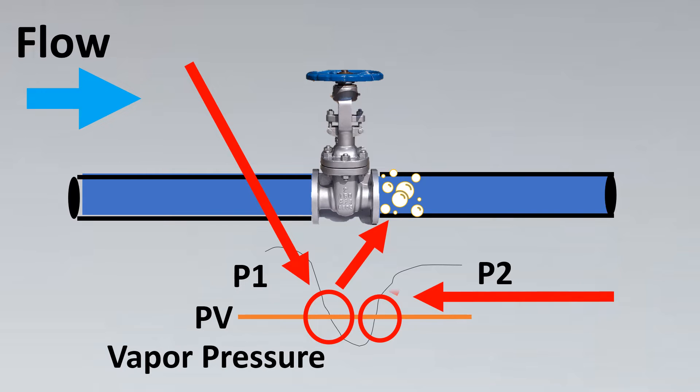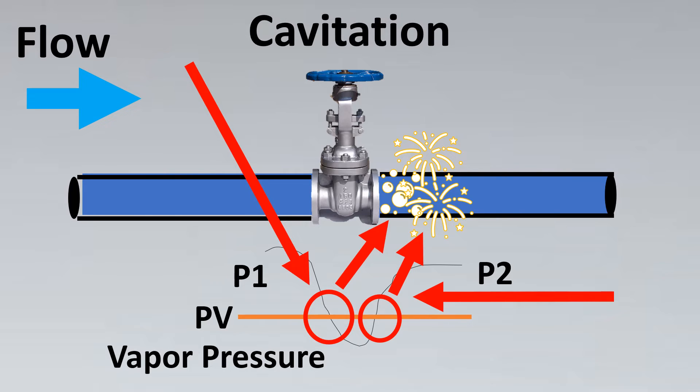At the exact opposite side, if you notice, the vapor is going to turn back into liquid state. Here what is going to happen is the bubbles are going to burst to come back to liquid state, which is called popping, which has very high velocities that can damage the valve and the piping downstream. This entire phenomenon is called cavitation.